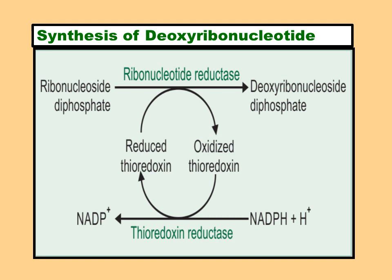Synthesis of deoxyribonucleotides: either purine or pyrimidine ribonucleosides must be converted to the deoxy form. The major enzyme required is ribonucleotide reductase. Reduced thioredoxin is converted to oxidized thioredoxin as coenzyme. Oxidized thioredoxin is reconverted back to reduced thioredoxin by thioredoxin reductase using NADPH, which is converted to NADP. The key reaction is conversion of ribonucleoside diphosphate to deoxyribonucleoside diphosphate by ribonucleotide reductase.